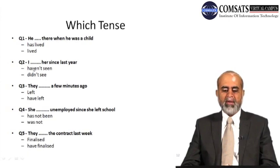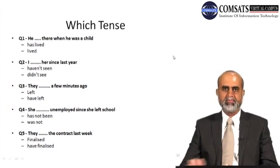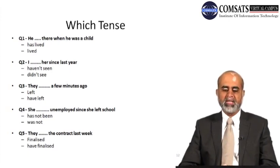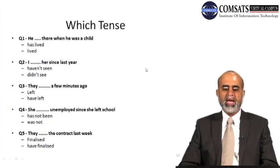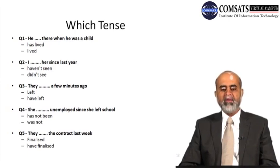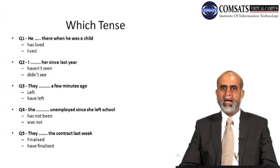Question two: 'I [haven't seen / didn't see] her since last year.' The correct answer is 'I haven't seen her since last year' because of the word 'since.' The action started last year but still continues to the present — therefore we use present perfect. It means the last time I saw her was last year and I am still not seeing her.